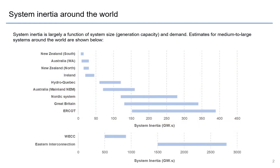The total system inertia is largely a function of system size — so generation capacity and total demand at any point in time. The graph here shows inertia estimates for medium to large scale systems around the world.